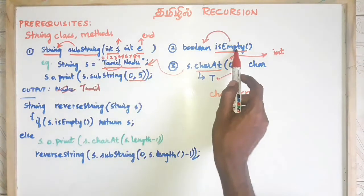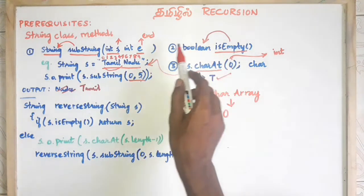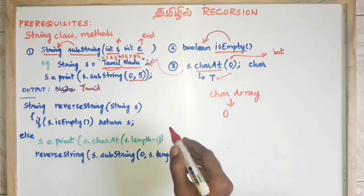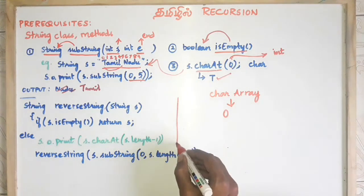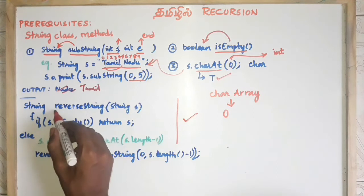We can learn these three methods: substring, isEmpty, and charAt. Using these three methods, we can learn the reverse string program and how to use each method.